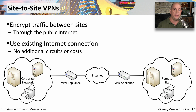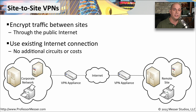A site-to-site VPN allows us to encrypt all of the traffic between those locations by using a VPN appliance, a firewall, a router, or another device that can handle these types of site-to-site VPNs. This means we don't have to install a new network connection, we don't need a new WAN link, there are no additional circuits, and generally no additional costs, as long as you already have a device that can handle a site-to-site VPN.